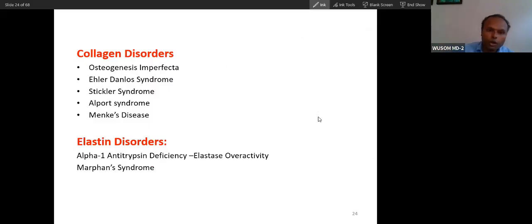Now, let's talk about the disorders. Do you know what is the cause of osteogenesis imperfecta? The cause of osteogenesis imperfecta is type 1 collagen.